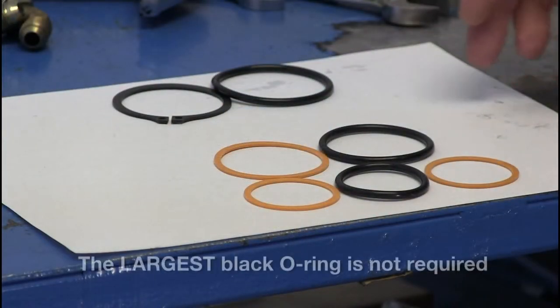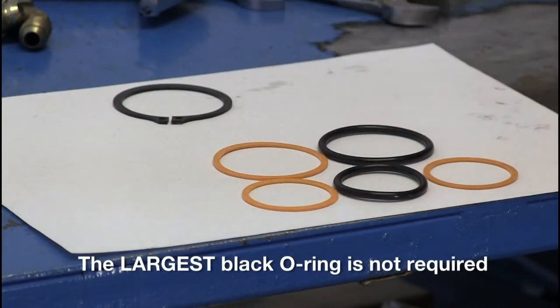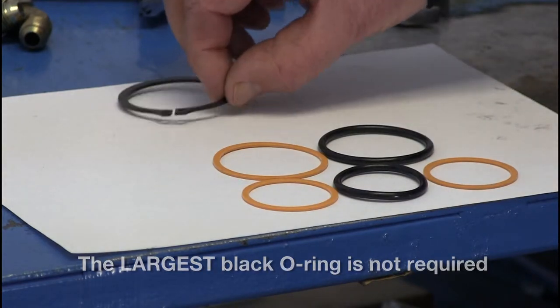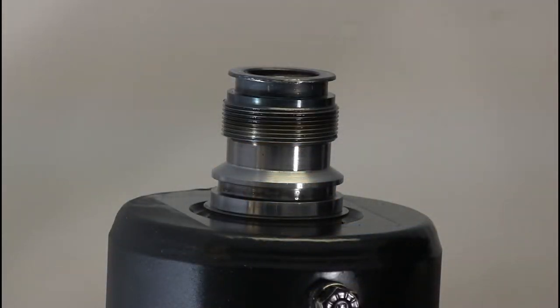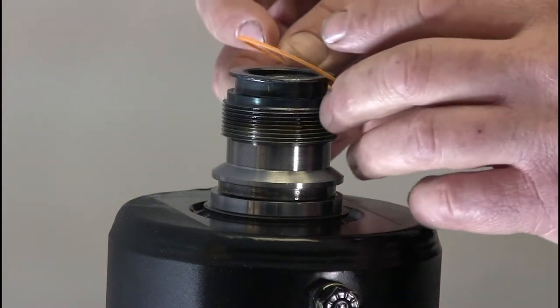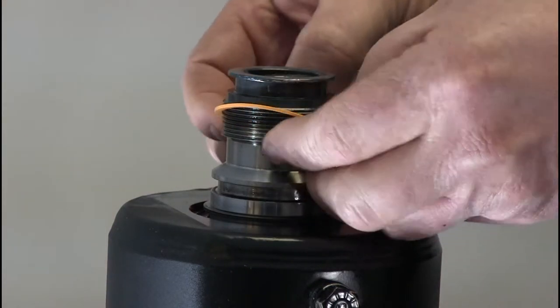This is the seal kit. We will not be using one of the large O-rings and the snap ring. We are now going to replace the seals. First the large orange O-ring goes on the bottom.